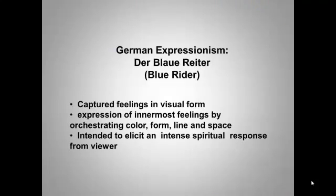Der Blaue Reiter was formed in 1911 in Munich as a loose association of painters, led by Russian immigrant Vasily Kandinsky and German native Franz Marc. They shared an interest in abstract forms and in prismatic colors — the colors of the rainbow — which they felt had spiritual values that could counteract the corruption and materialism of their age. Kandinsky wrote that the name Blue Rider emerged from Marc's enthusiasm for horses and his own love of riders, combined with a shared love of the color blue — though they attached different significance to it. For Kandinsky, blue is the color of spirituality, and the darker the blue, the more it awakens human desire for the eternal.